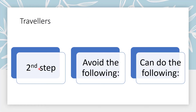The second step for travelers will be: avoid the following — avoid swimming, bathing, canoeing, rafting, scuba diving, and kayaking in fresh water in those regions already listed. That includes canals, lakes, streams, springs, pools, ponds — anywhere you can think of where the cercaria could be found.